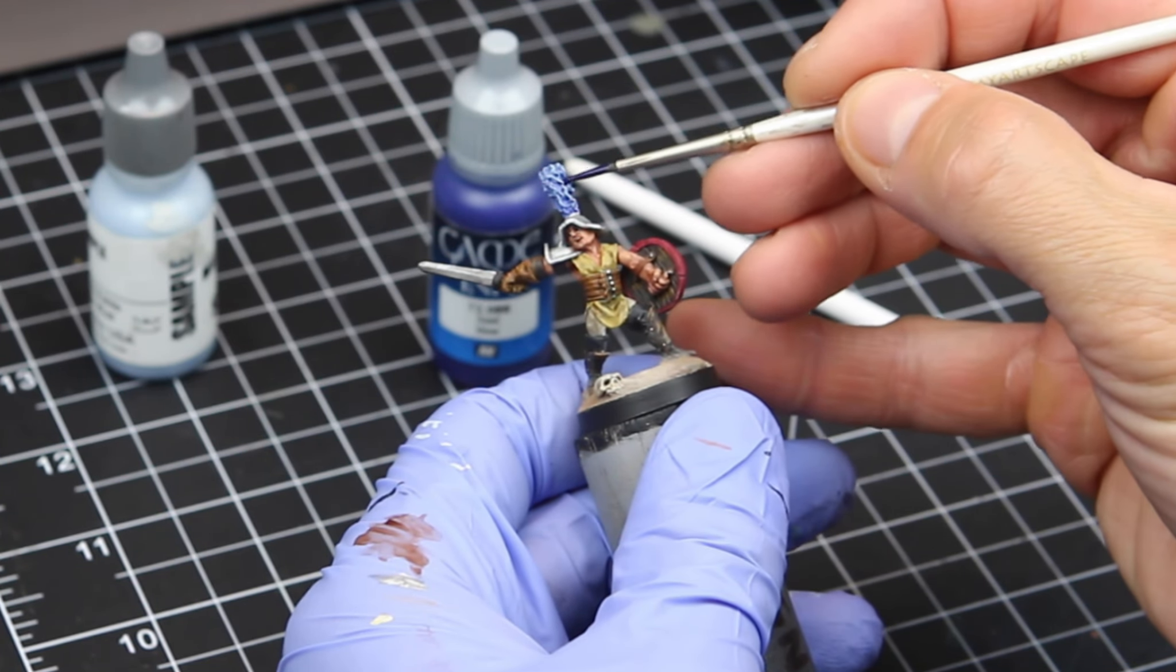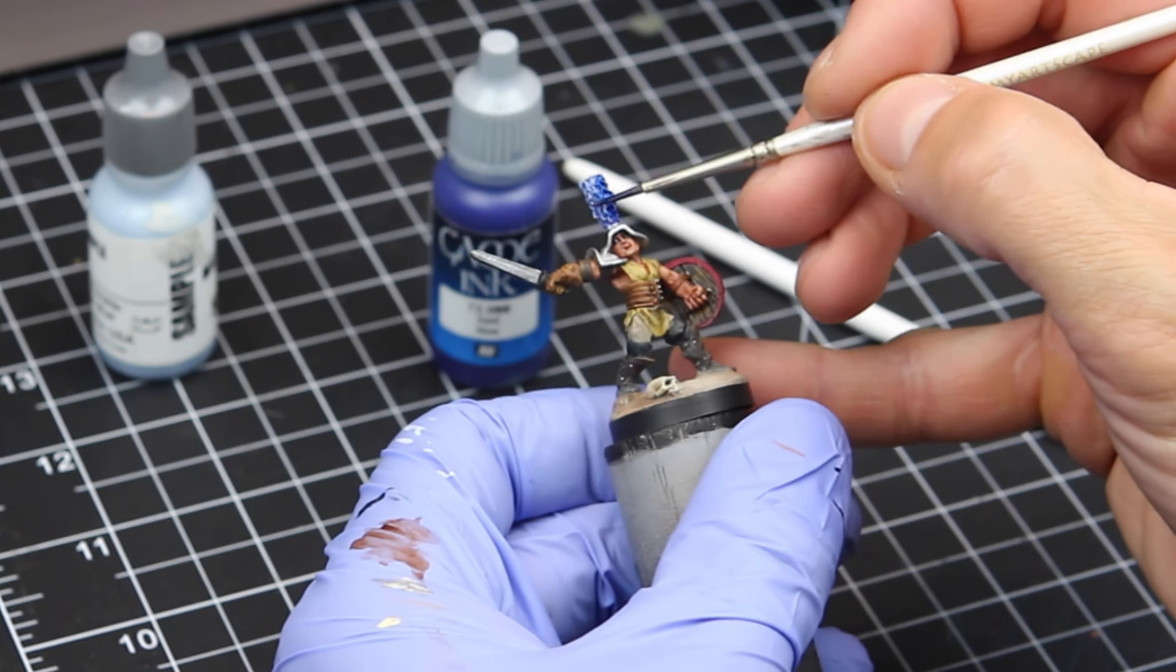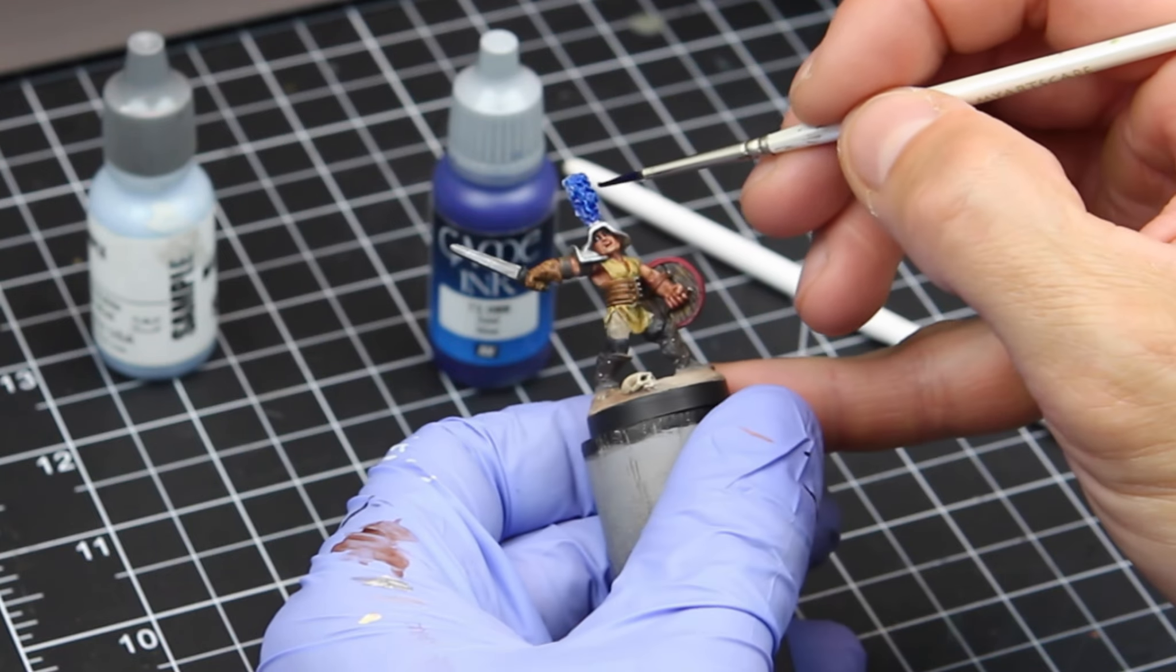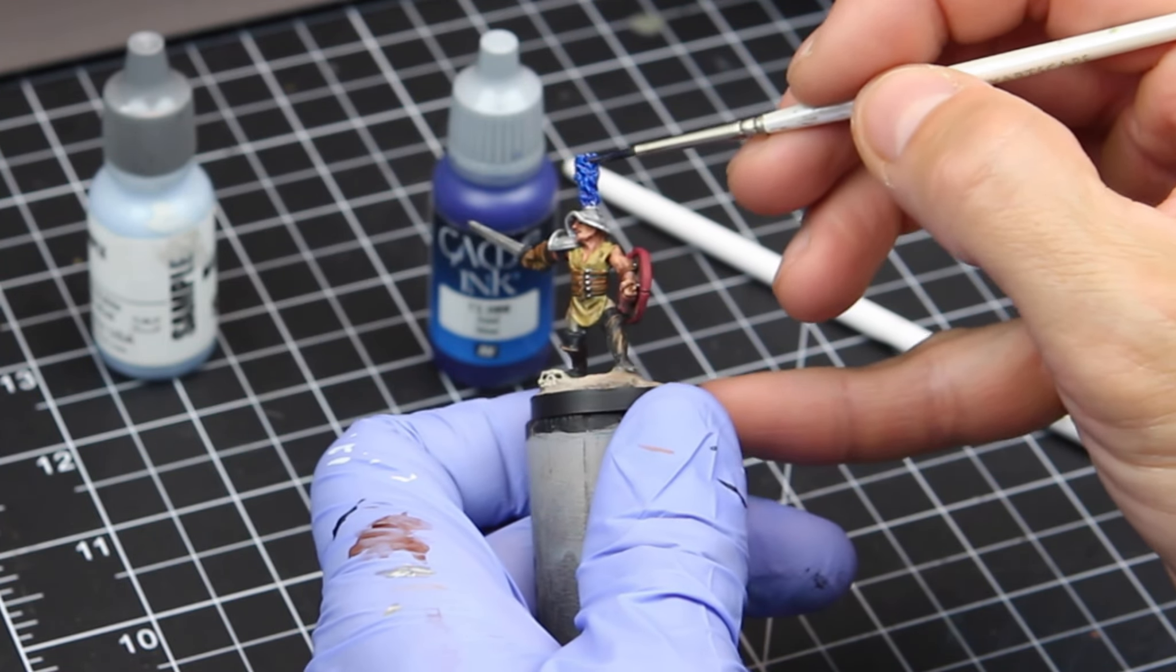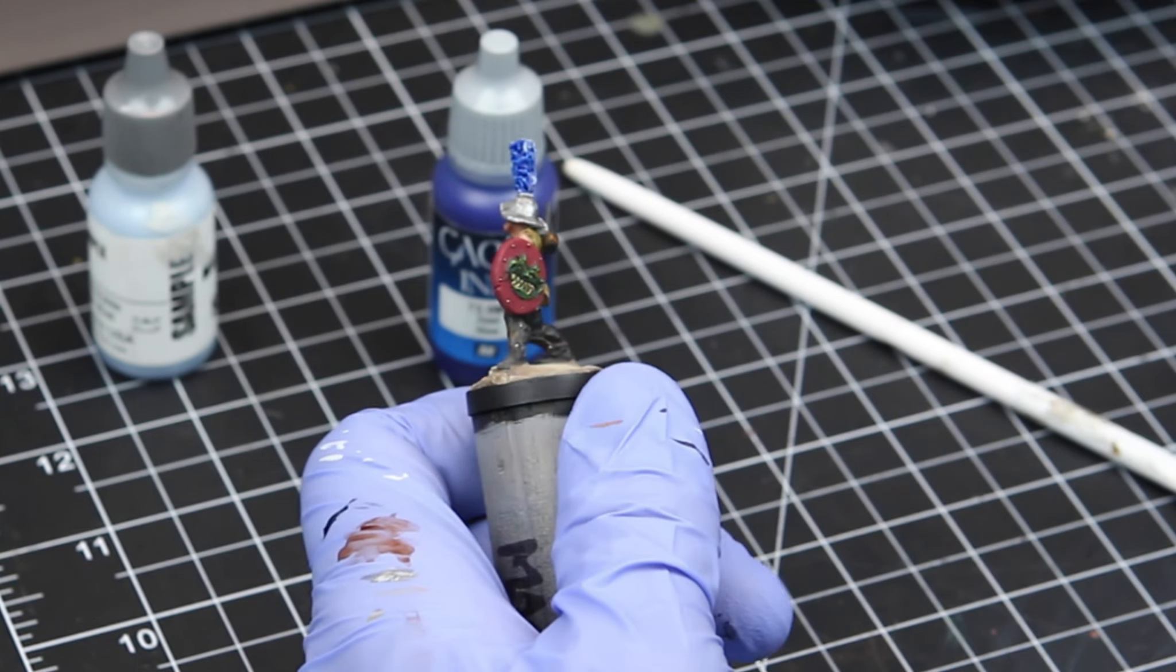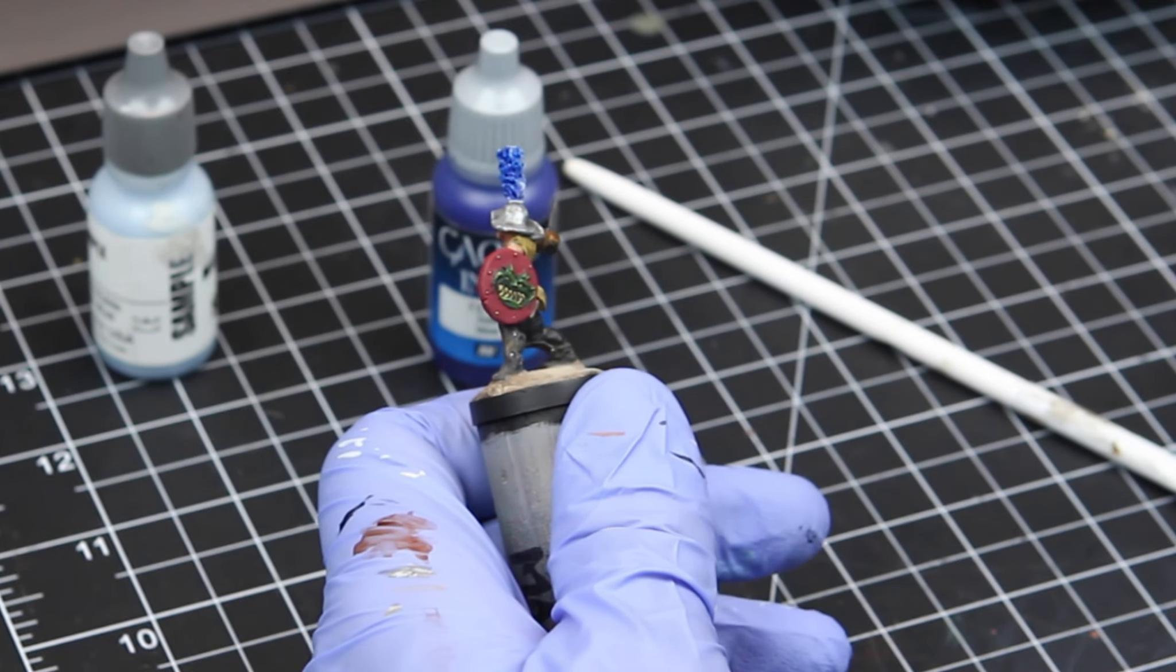Now I'm looking to get a little bit more definition, a little bit more contrast, actually, on the plume. So I'm just taking some Vallejo ink blue, and I'm being very careful as to where I'm placing it, making sure just to get it on the plume. If you wanted to, you could water that down a little bit, and actually place a little bit on the helmet, and it would sort of act like the reflection from that blue plume onto the helmet.